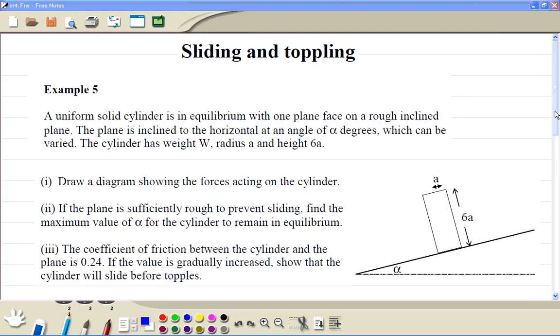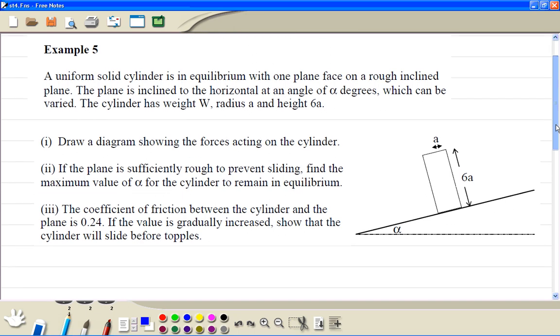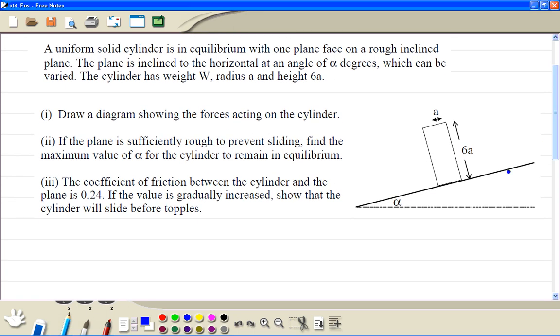Sliding and toppling, example 5. Forces acting at this object are the weight, then the normal reaction, then the frictional force acting up.